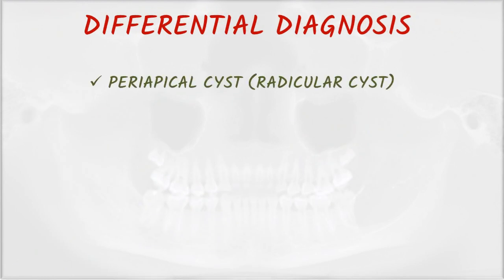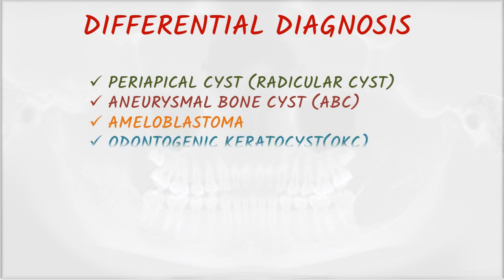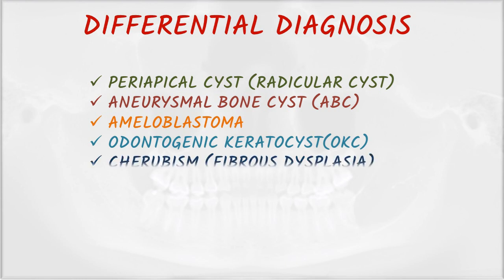Differential diagnosis of dentigerous cyst includes: periapical cyst or radicular cyst, aneurysmal bone cyst (ABC), ameloblastoma, odontogenic keratocyst (OKC), cherubism or fibrous dysplasia, and Stafne cyst.